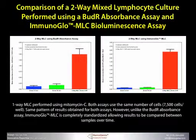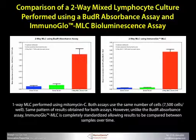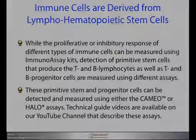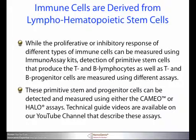Here we see a comparison between BUdR and ImmunoGlo for a two-way MLC in which both donors are stimulating each other. All of these results illustrate that using radioactive tracers is now completely unnecessary. Furthermore, when you use an ATP bioluminescence assay, you're assured of the most sensitive non-radioactive readout available.